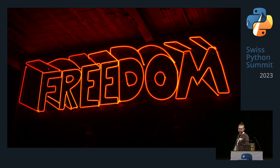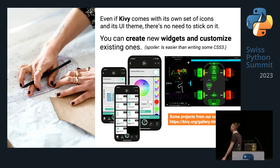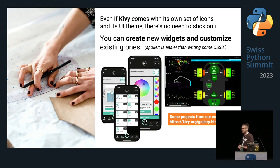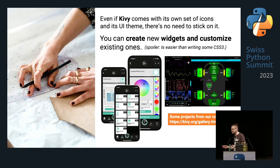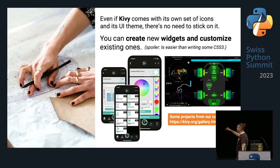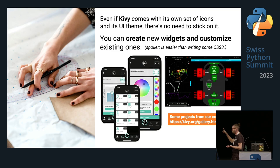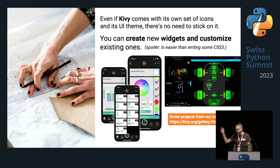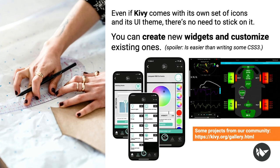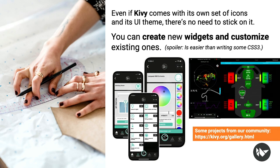Kivy also gives you freedom. Even if Kivy comes with its own set of widgets, there's no need to stick with them — you can create new widgets and customize existing ones. And spoiler: it's easier than writing CSS3, at least for me. For example, one app from one of our sponsors tracks a car on a racetrack in real-time, available for iOS, Android, and Linux/Raspberry Pi. Another app I maintain for a smart home ecosystem has many custom widgets, like one for a rolling shutter that I'm quite proud of.